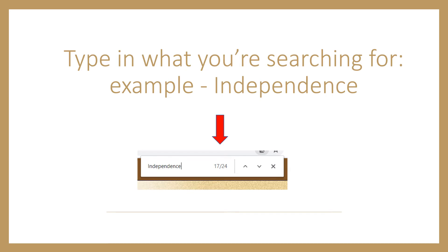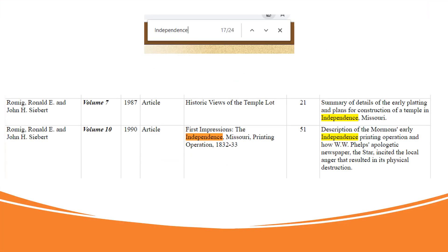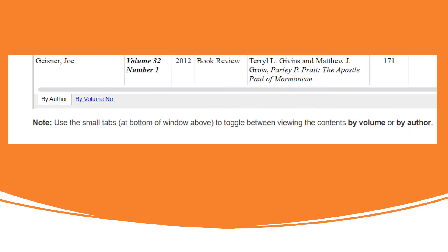The up and down arrows to the right of the count allow you to move from reference to reference. The search text will be highlighted in the index. Use the up and down arrows to move through the references. For the examples we have been viewing, the index has been organized by author.